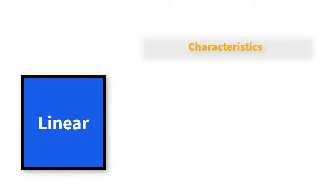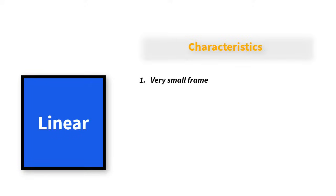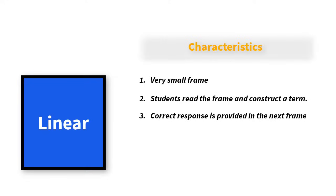The characteristics of this program include the following. Number one, it has very small frames, each consisting of about just two sentences with a keyword or words omitted. The students read the frame and then they write or construct a term. Number three, the correct response is provided in the next frame where the next bit of information is given. Also, all students progress from the first frame to the second frame and so on to the end, following the same sequence, regardless of what type of response they give.